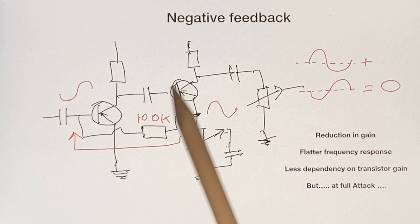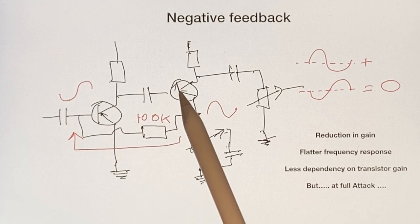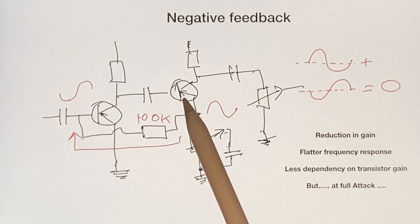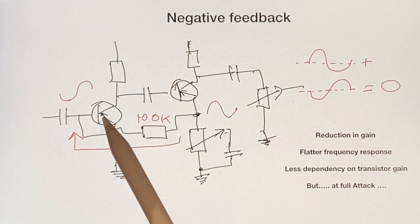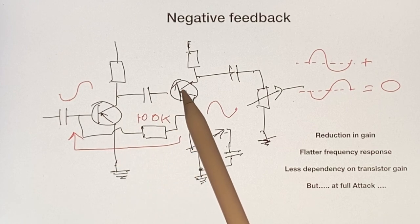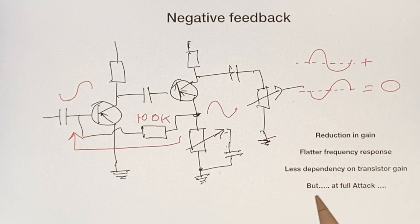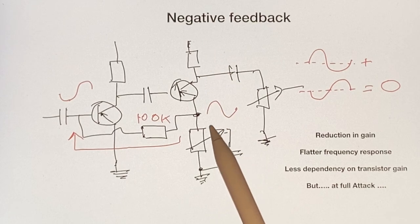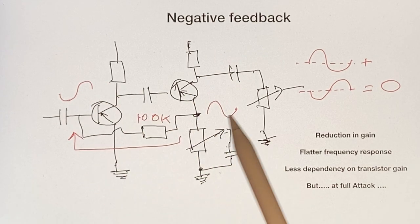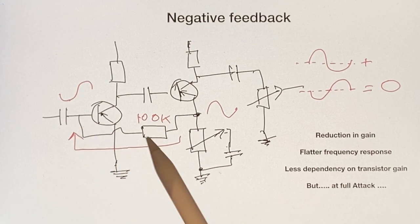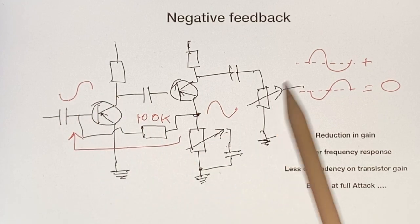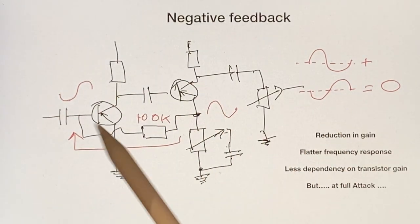There's less dependency on the actual gain of each transistor. So if you're trying to make a circuit with varied hFEs, as old germaniums were, it's a way of reducing the effect they have on the overall circuit - less dependent on that transistor gain. These are the properties being exploited with this AC signal being fed back.